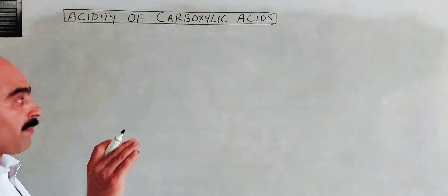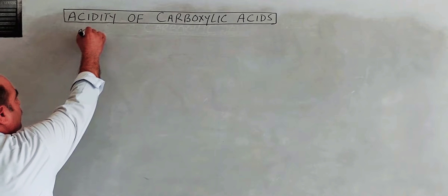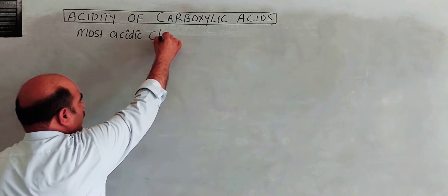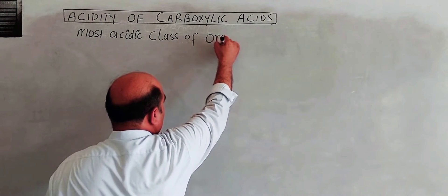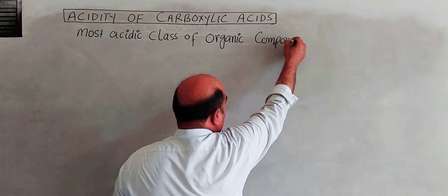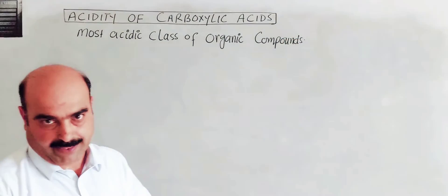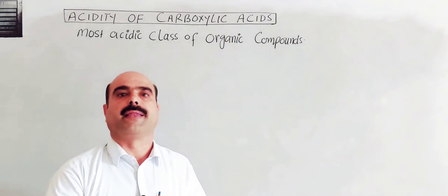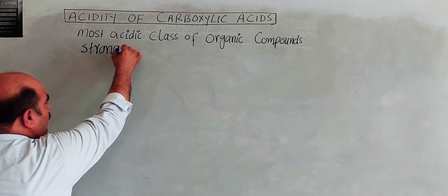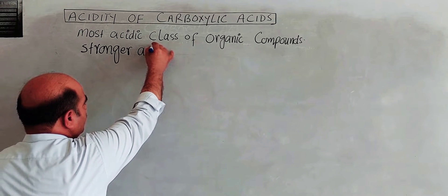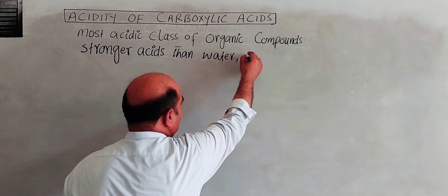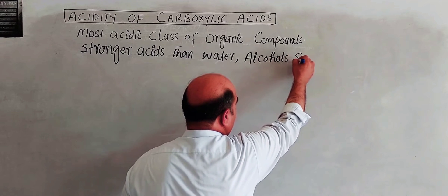Most carboxylic acids are the most acidic class of organic compounds. These are stronger acids than water, alcohols, and phenols.